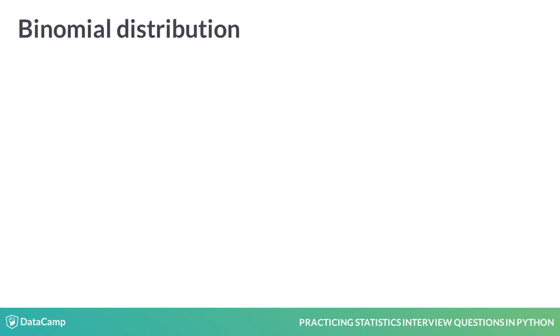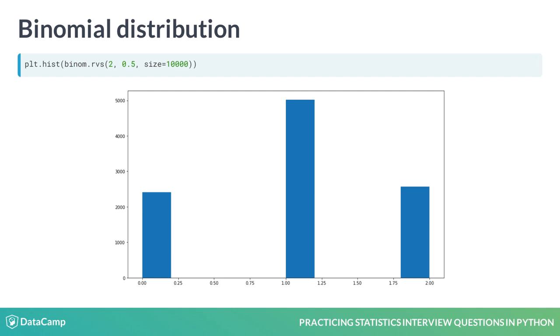Next up is the Binomial distribution, which can be thought of as the sum of the outcomes of multiple Bernoulli trials, meaning those that have an established success and failure.